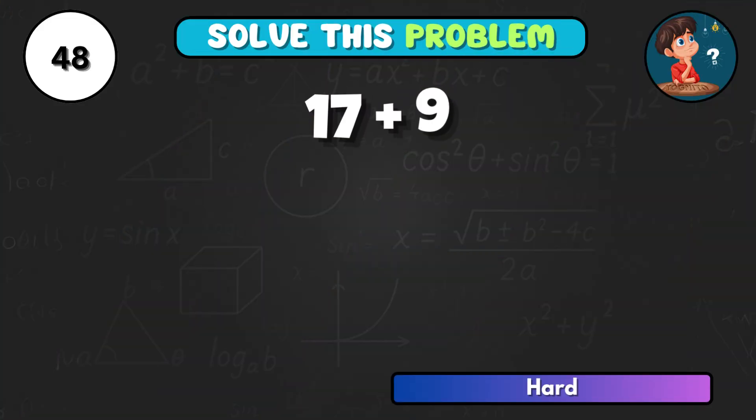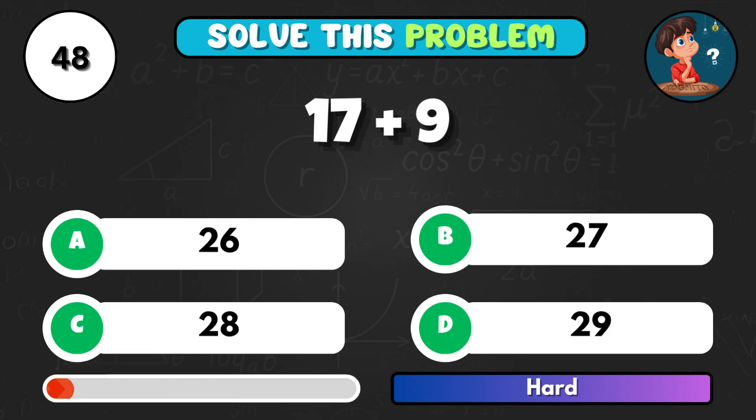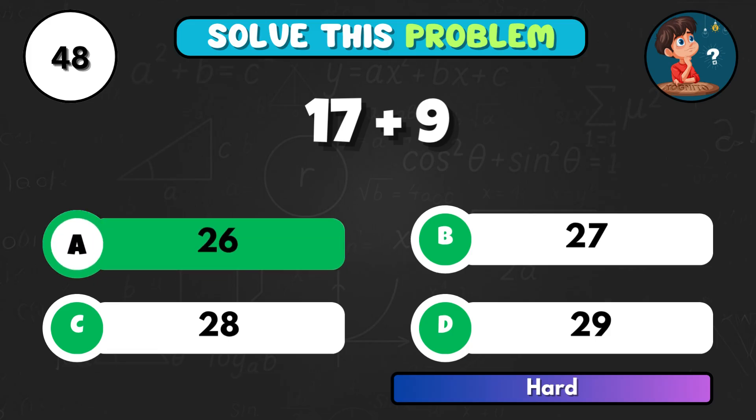17 plus 9, what do you get this time? Correct choice A, equals 26.